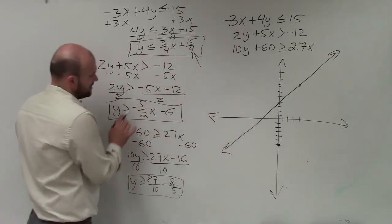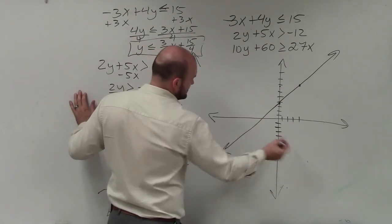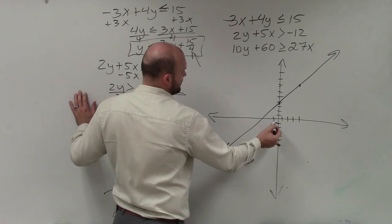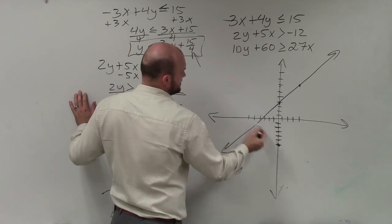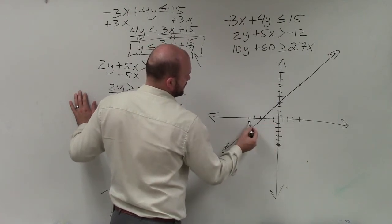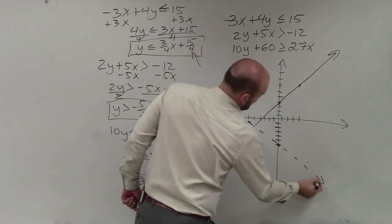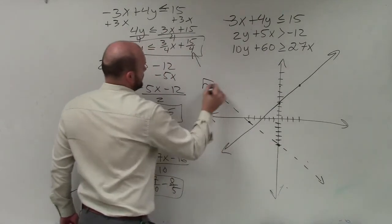And now my slope here is a negative 5 halves. So instead of going down 5 over 2, I'm going to go up 5 to the left 2. So 1, 2, 3, 4, 5. And then 1, 2. And this inequality is greater than. So that means it's going to be dashed and not a part of my solution.